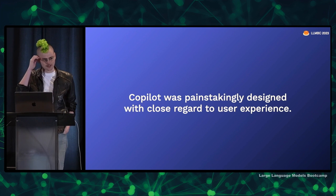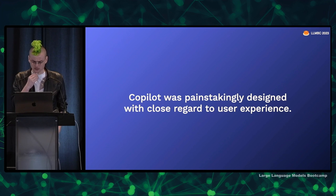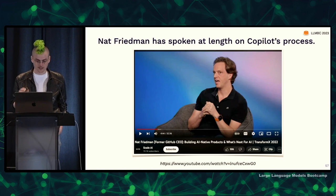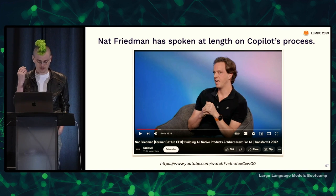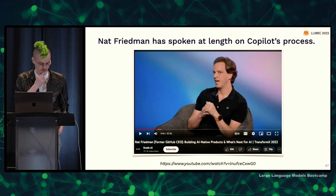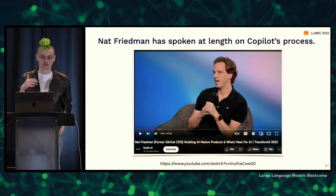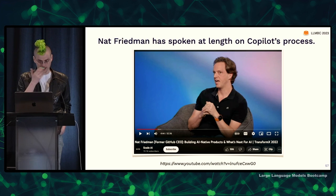Copilot was painstakingly designed with very close regard to user experience. Nat Friedman has spoken on this at length — there are recorded talks you can check out, like one from Scale AI on YouTube and a Lunar Society podcast, which are very high information-density interviews about the process. The first phase looked like tinkering with different ideas to get a minimum viable product. They had three core ideas: a PR bot that would look at issues in your repository and automatically start solving them, which requires really high accuracy since you're adjusting people's code directly.